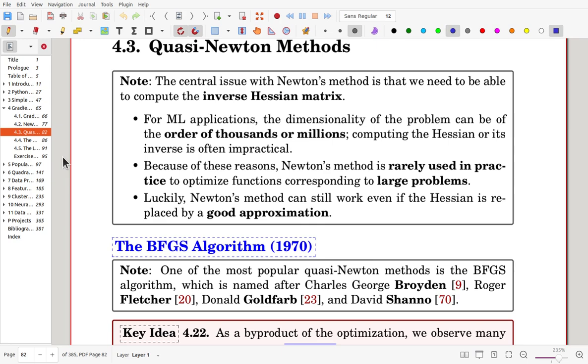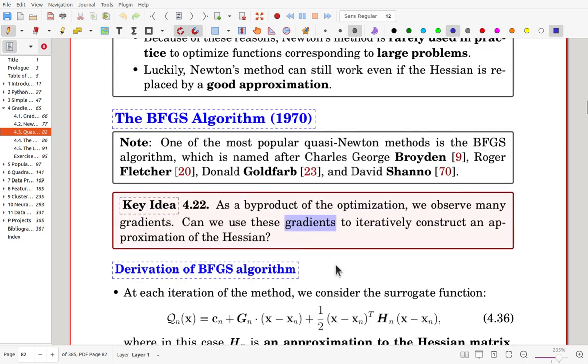In this section, we will study one of the most popular Quasi-Newton methods called the BFGS algorithm. In 1970, four people, Broyden, Fletcher, Goldfarb, and Shanno published their papers independently, and the algorithm is named taking the initial letters. The key idea in the algorithm is to use gradients to construct an approximation of the Hessian.